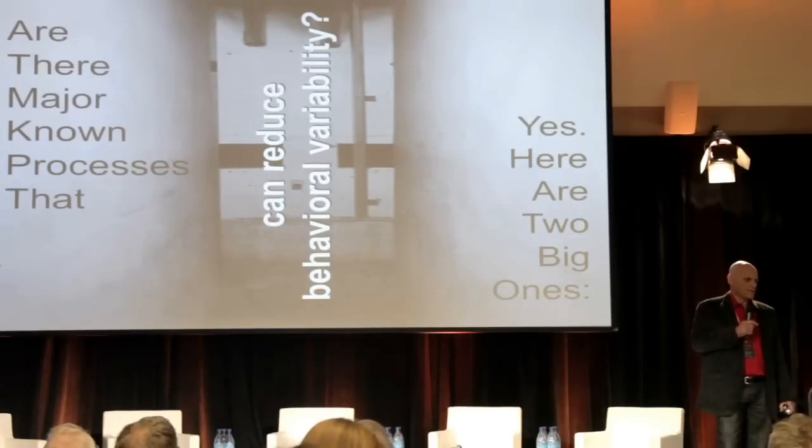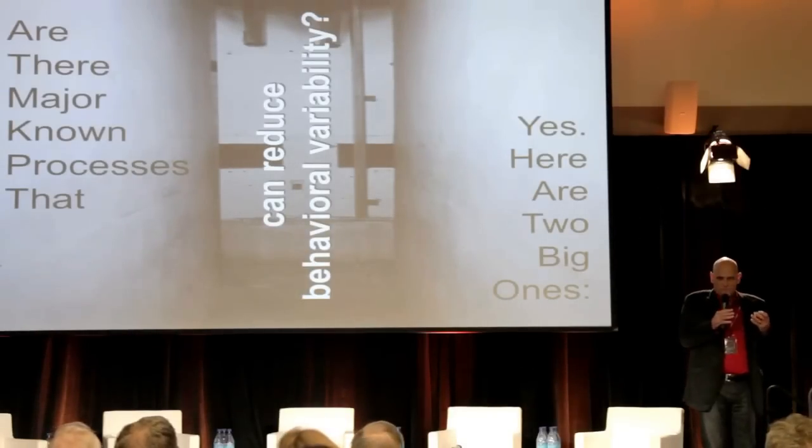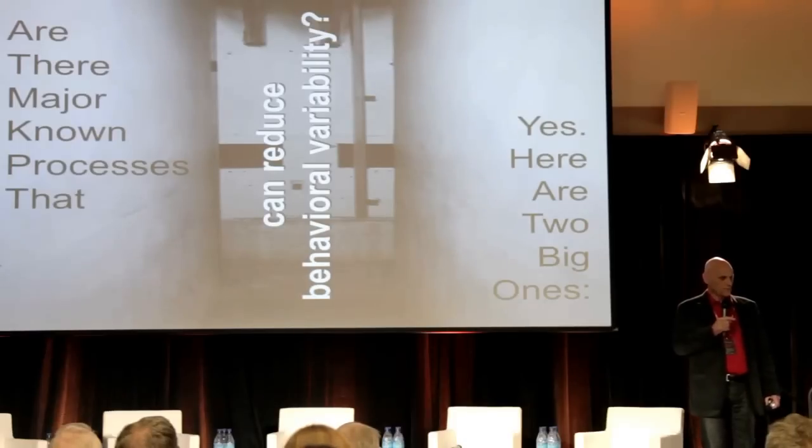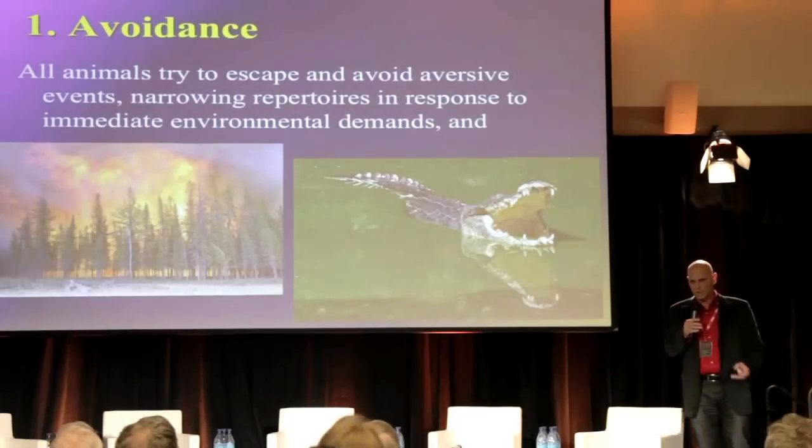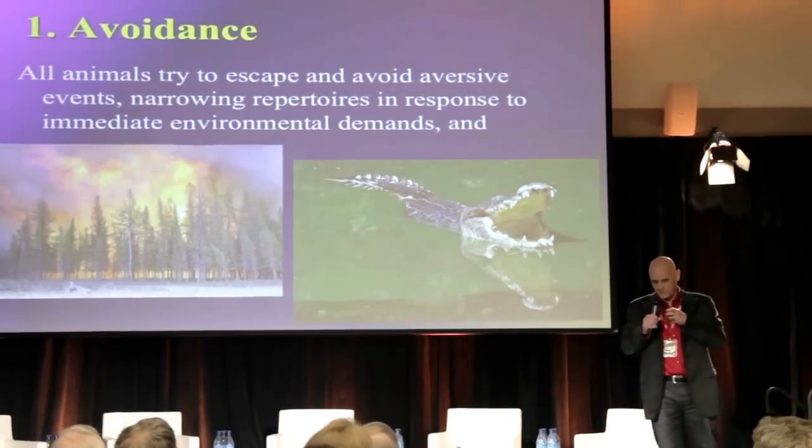Are there major known processes that can restrict behavior variability? There are many of them, but two big ones that we know about. One is avoidance. If I were to run down here and grab Randy's throat very tightly, of all the many things that he could be doing right now, suddenly only one thing would be important. Repertoire would narrow down to one thing and one thing only — being able to breathe. We are evolutionarily adapted to do that, to focus our attention, elicit our behavioral resources, mobilize our physical resources to stand to challenges that require escape or avoidance.